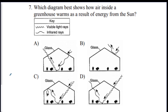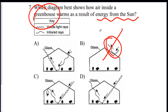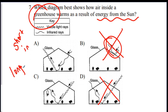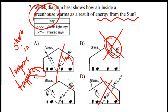Question 7 — sorry, these were out of order: which diagram shows how air inside a greenhouse warms as a result of energy from the Sun? B shows nothing getting in — wrong. D shows nothing gets trapped — wrong. Another option shows nothing gets trapped either — wrong. The idea is you want shortwave in and longwave trapped. One option shows longwave going in, which is wrong. The answer is C: shortwave in, longwave gets trapped.